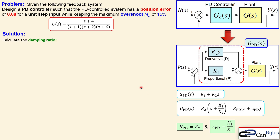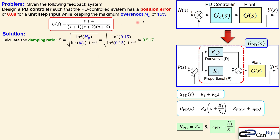Let's start with the frequency response method. The damping ratio relates to the phase margin via a formula valid for a pure second-order system with only poles. We don't have that here, but we'll still use it with an extra safety margin. With an overshoot of 0.15 (as a scalar, not a percentage), we get a damping ratio of 0.517.